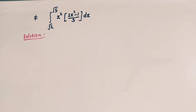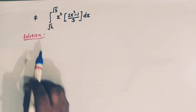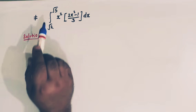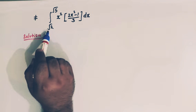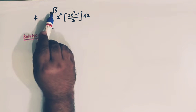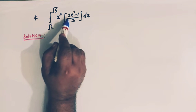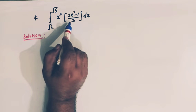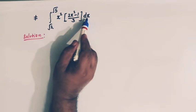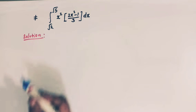Hello viewers. In today's class we are going to solve an integral in which the greatest integer function is involved. We will evaluate the integral from square root of 2 to square root of 5 of x squared times the greatest integer of (2x squared minus 1) over 3, dx.